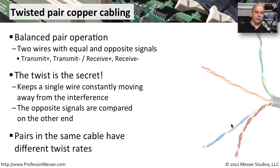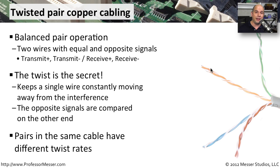Another important characteristic of twisted pair cable is that the pairs are twisted at different rates. For example, the blue pair has a very slow twist, while the orange cable has a completely different twist rate. That way you're able to differentiate between interference regardless of which pair it may have come across.